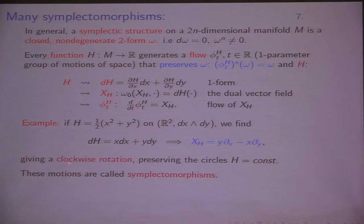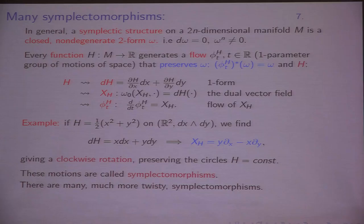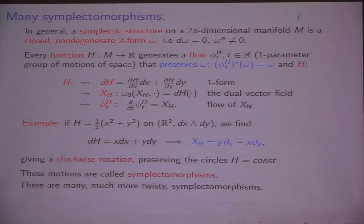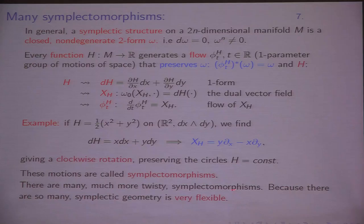These motions are called symplectomorphisms — diffeomorphisms which preserve the symplectic structure. On any symplectic manifold there are lots of them, because there are lots of functions, so you get lots of structure-preserving diffeomorphisms, which is very different from Euclidean geometry. If you let the function H depend on time, you can do exactly the same thing and get not a flow but a path of diffeomorphisms, giving you very much more general transformations. This means symplectic geometry is very flexible — it's a structure you can move in many ways, which is a topological feature of it.